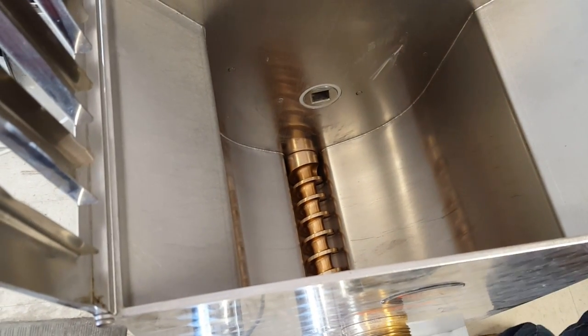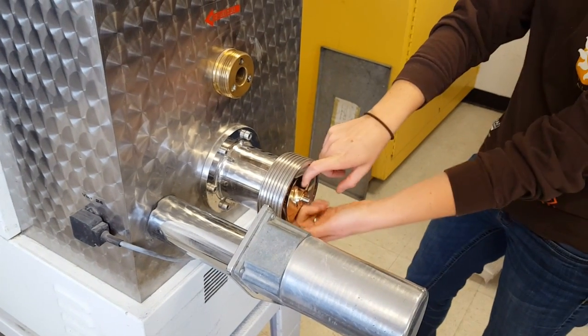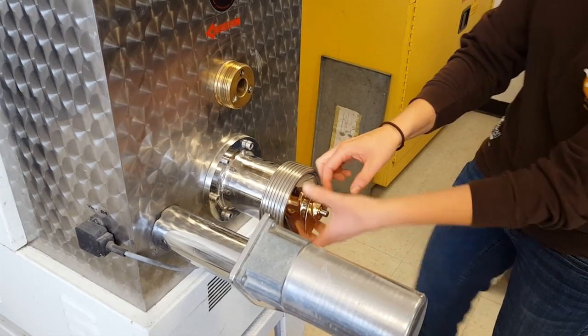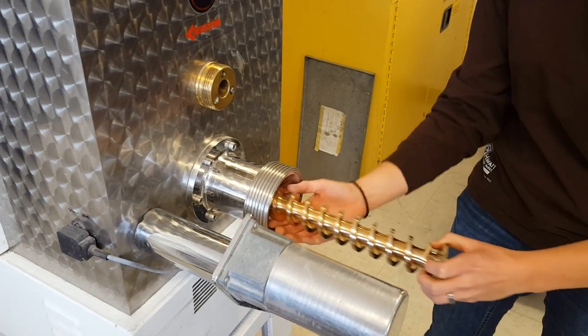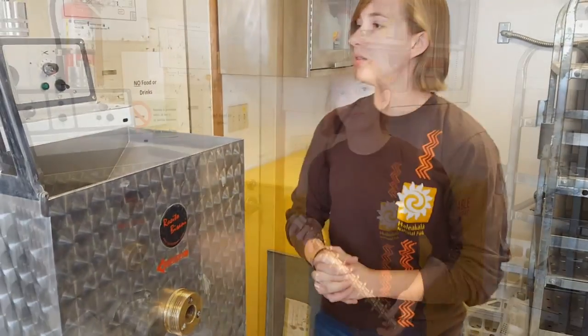Then we have a coil down here that you will just pull straight out. Sometimes when it has all the dough it's pretty tough, but just give it a good tug and it will come right out. And that's about it.